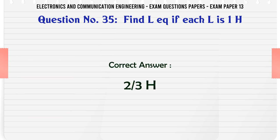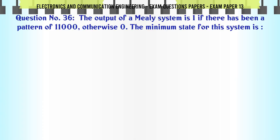The output of a Mealy system is 1 if there has been a pattern of 11000, otherwise 0. The minimum state for this system is: A: 4, B: 5, C: 6, D: 7. The correct answer is 5.